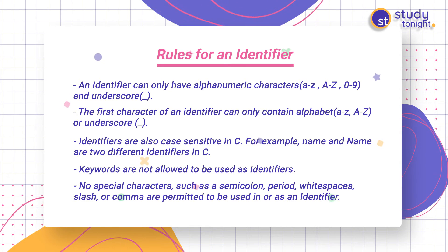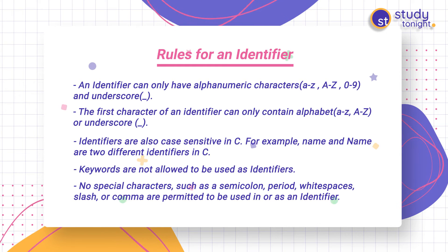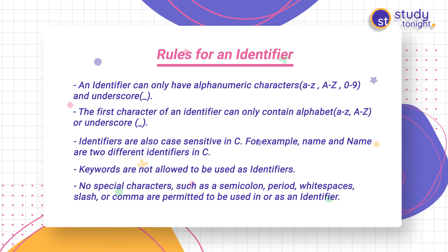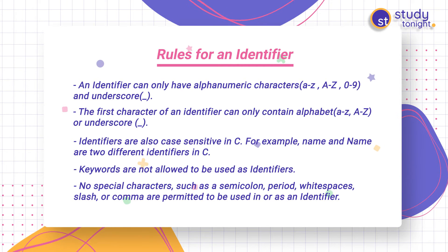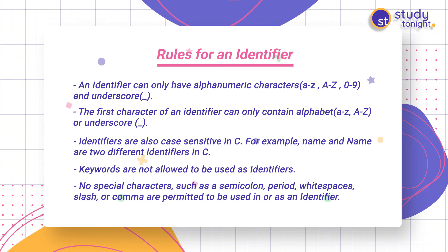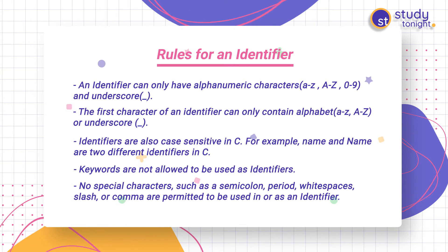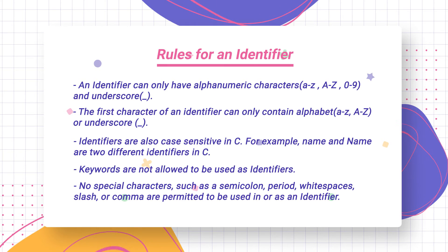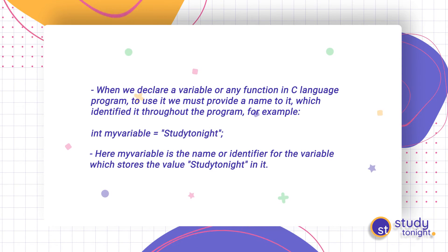Identifiers are also case sensitive. For example, if you have declared a variable 'number' in lowercase and then use it again in uppercase letters, those two will have different meanings. So 'name' and 'NAME' are two different identifiers in C. Additionally, keywords are not allowed to be used as identifiers, and no special characters such as semicolons, periods, white spaces, slashes, or commas — except the underscore — are permitted in an identifier.